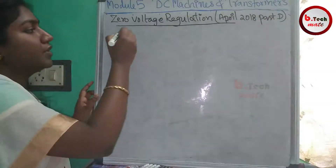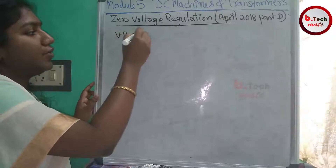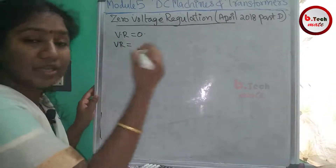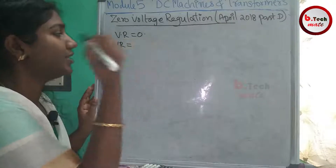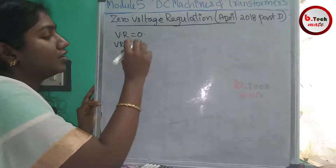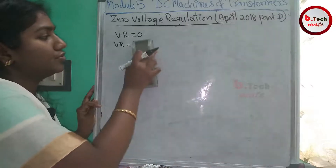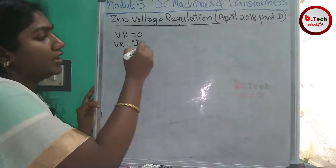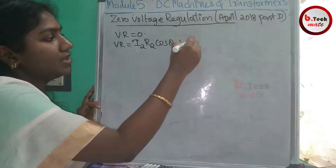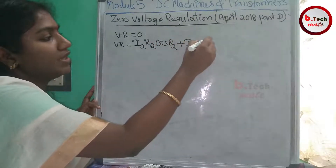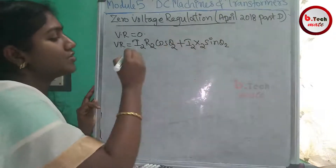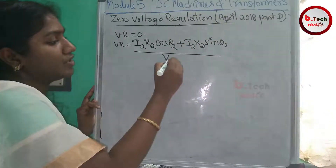The condition is: Voltage Regulation will be equal to zero. The general Voltage Regulation equation covers both lagging and leading power factor cases. The equation is: (I₂R₂ cosθ₂ + I₂X₂ sinθ₂) divided by V₂.